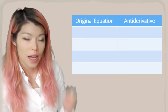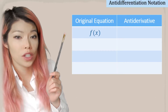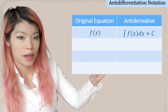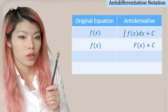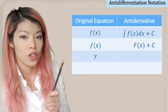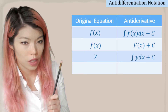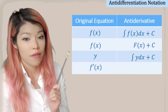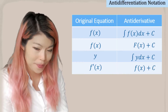So what is the notation? If the original equation is f(x) we can write the notation like so, or we can also write capital F(x). If the original equation was y, then the anti-derivative would look like that. And if the original equation was f'(x), then the anti-derivative would be its original function plus c.